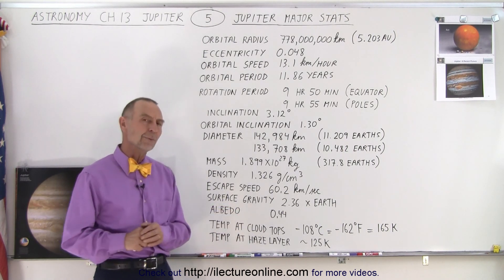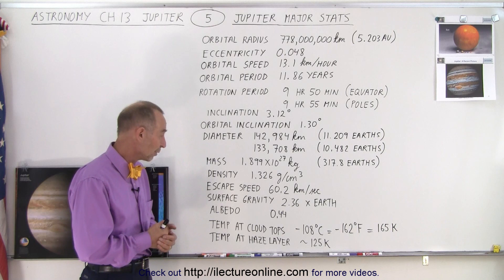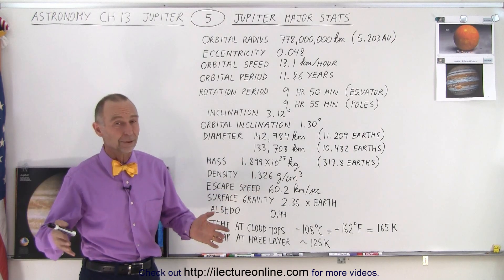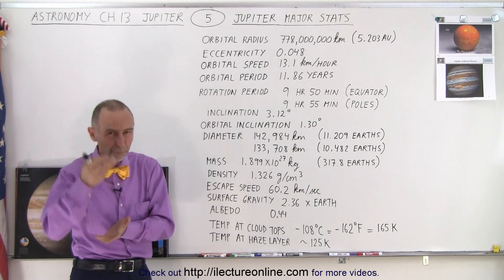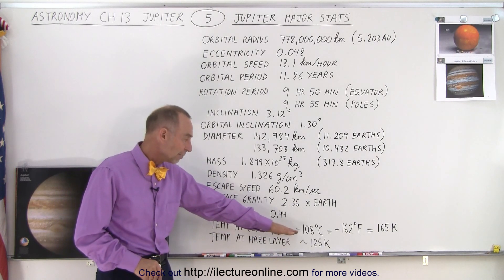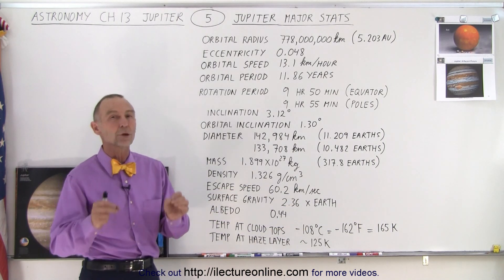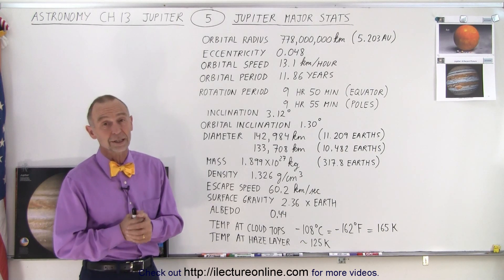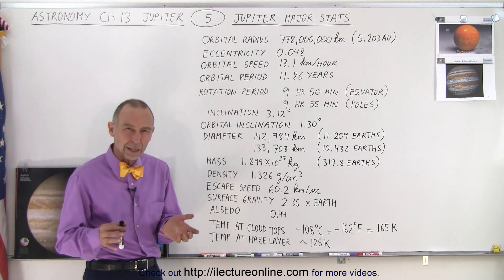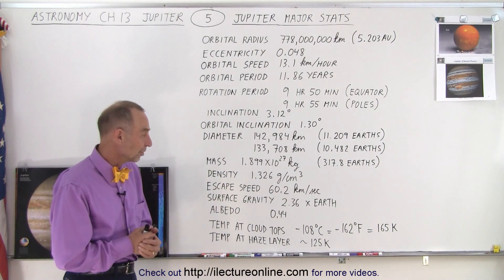The albedo is actually a bit less than expected for a gas planet — it does absorb quite a bit of energy from the Sun, reflecting only about 44%. The temperature varies depending upon where you consider the surface of the planet — whether at the cloud tops or the haze layer. At the cloud tops it's about minus 108 degrees Celsius, or minus 162 degrees Fahrenheit, which is colder than the coldest place ever recorded on Earth in the Antarctic, which went down to about minus 128 to 133 degrees Fahrenheit.